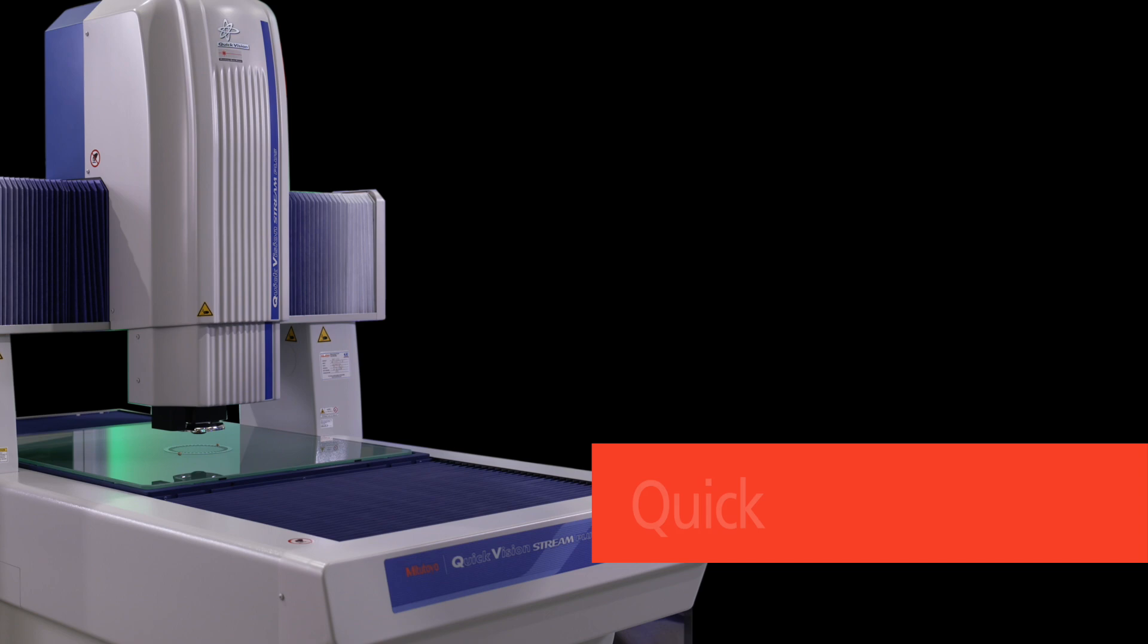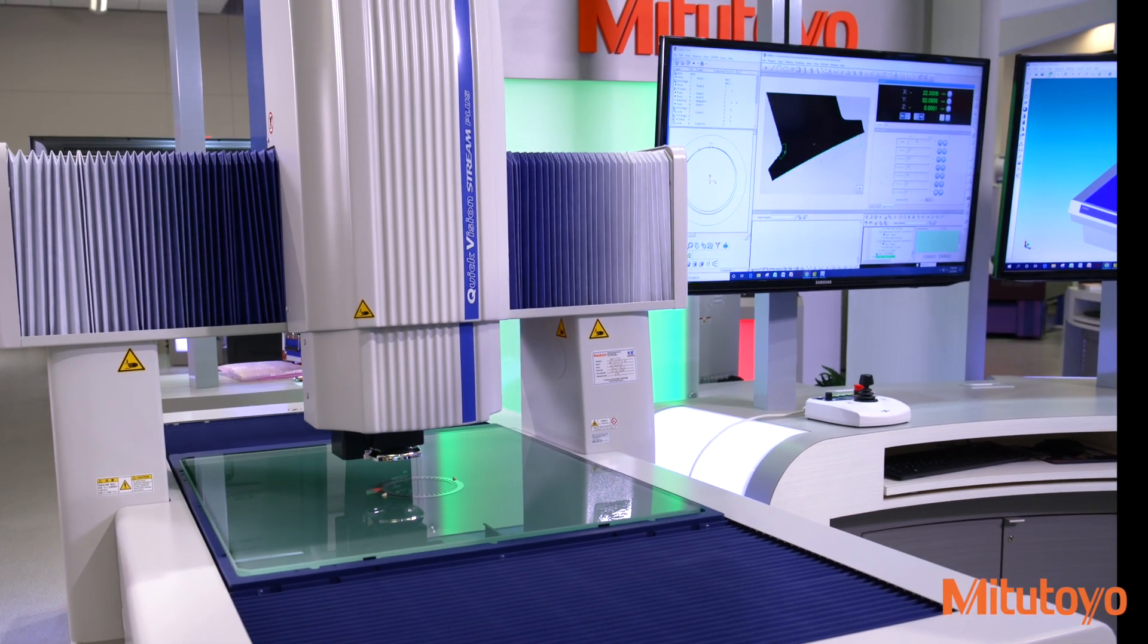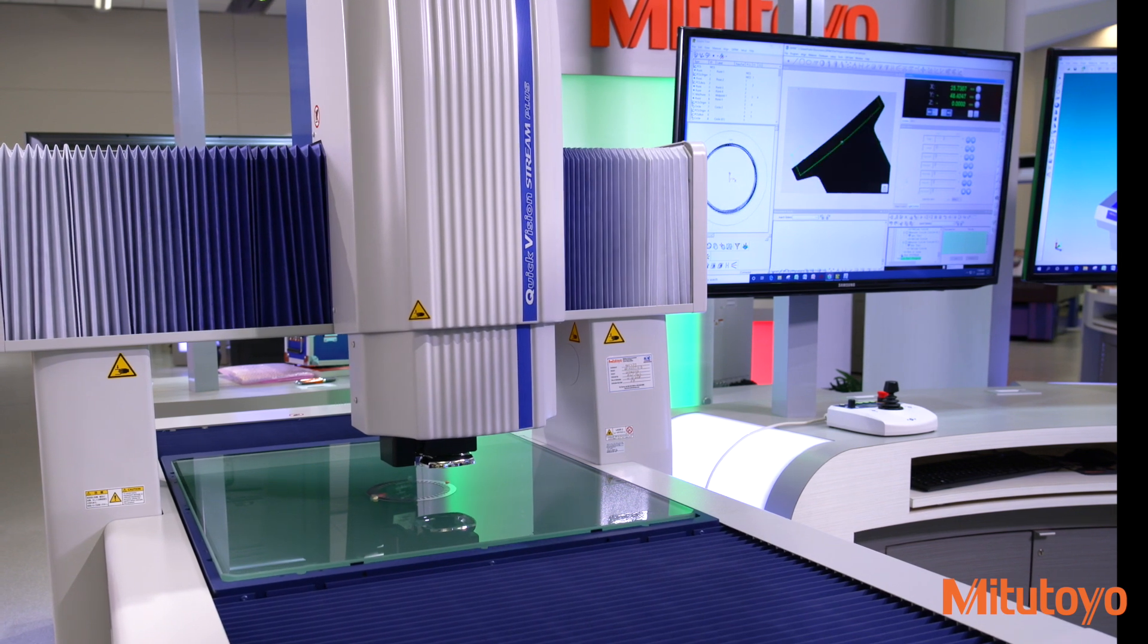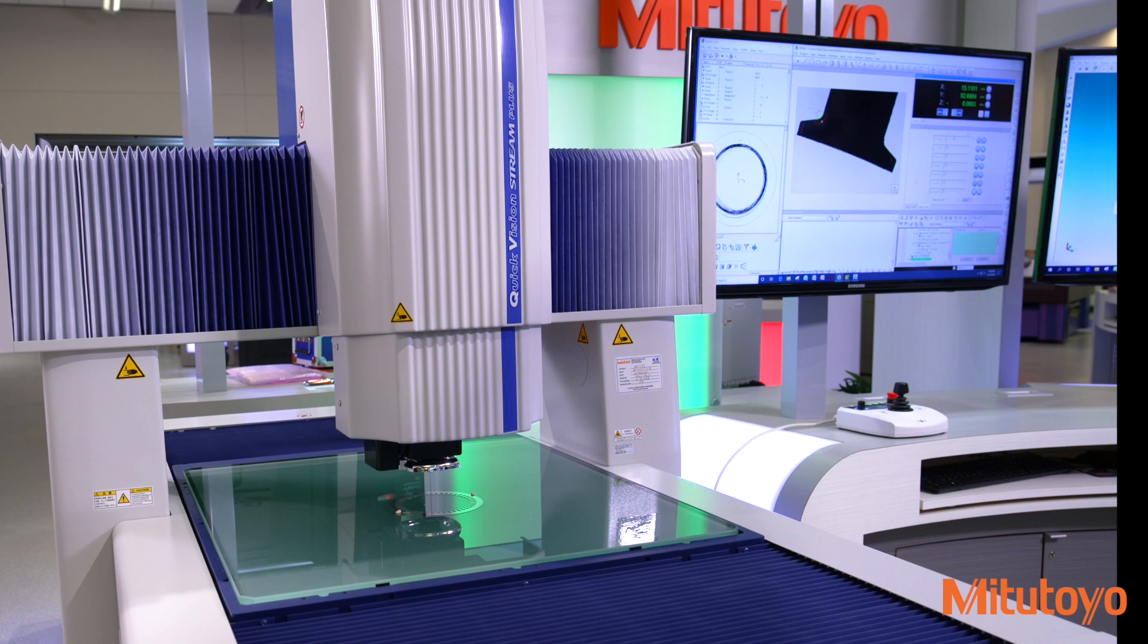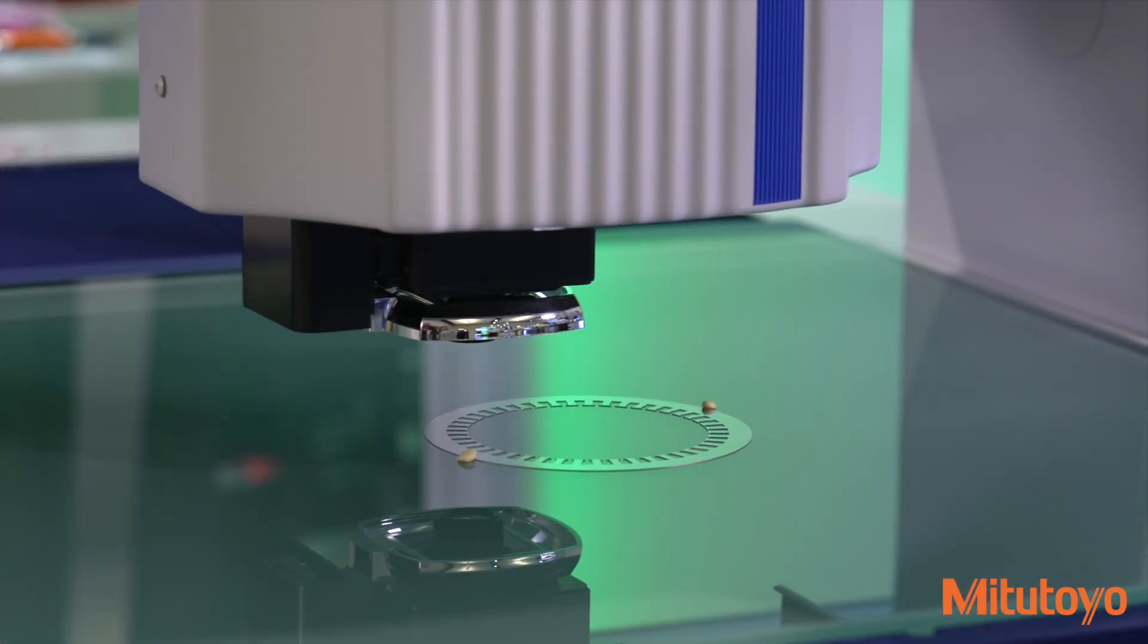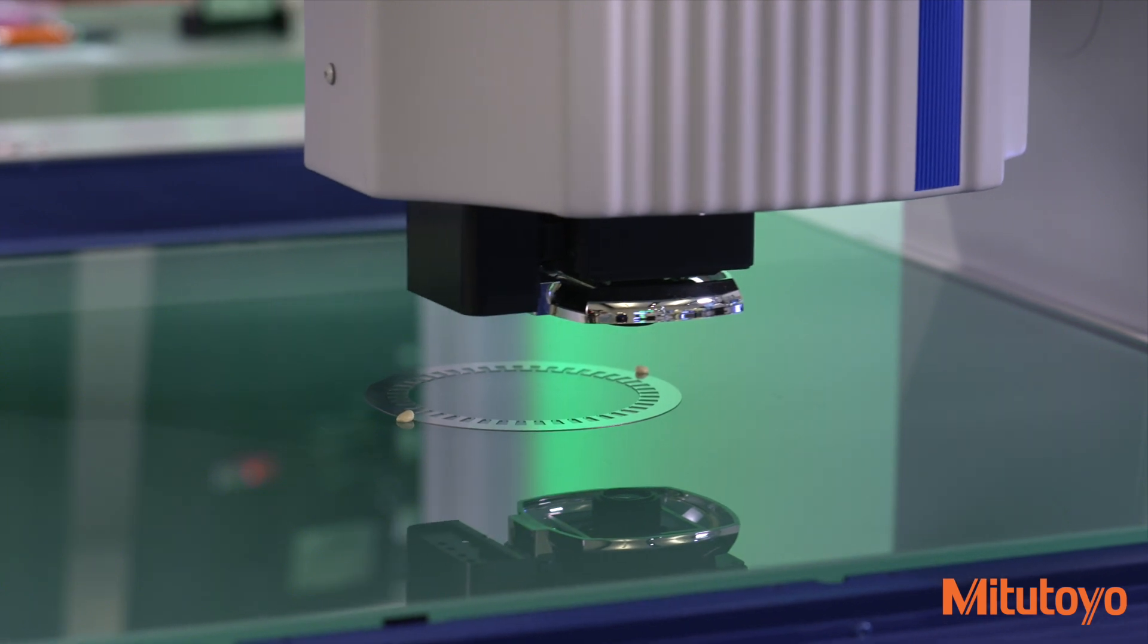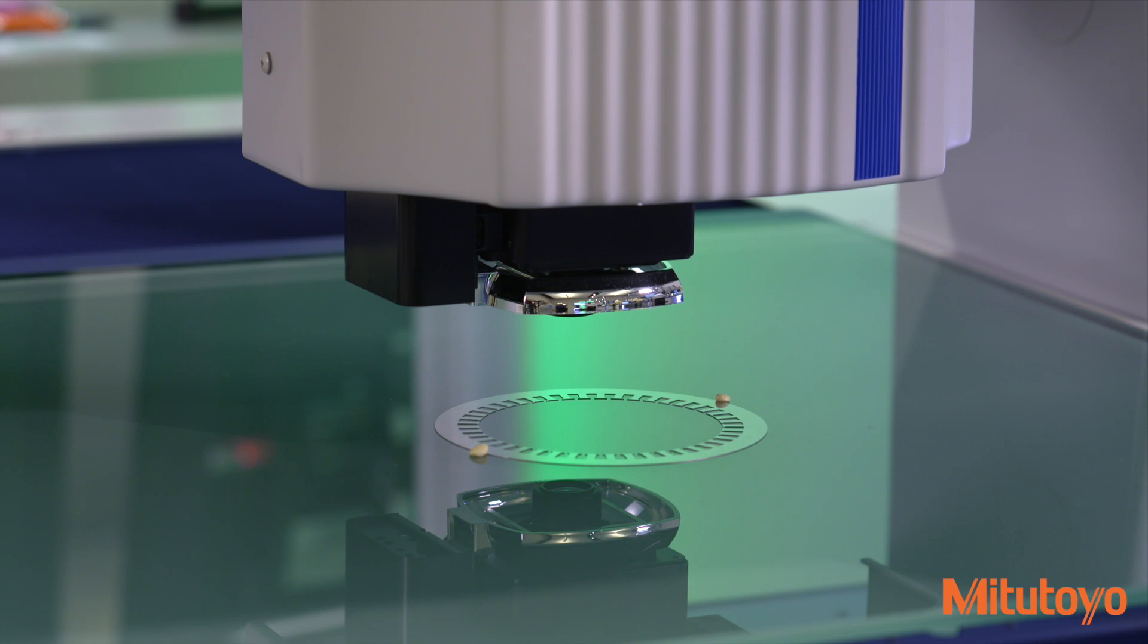The quick vision stream is the future of Mitsutoyo CNC vision measuring systems. Based on the QV Apex, the QV Stream uses a breakthrough lighting and camera combination that enables continuous vision measurement during stage movement. This light and camera innovation eliminates the need to accelerate, decelerate and then hold the stage motionless while taking measurements, dramatically improving throughput while maintaining accuracy.